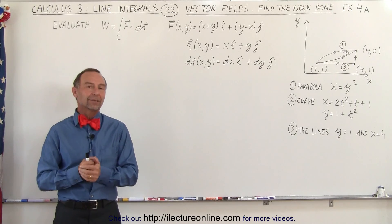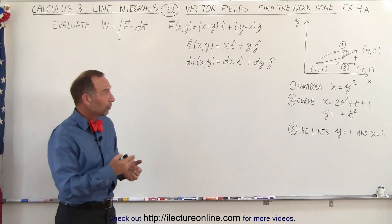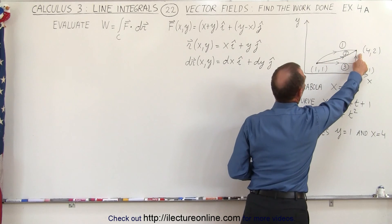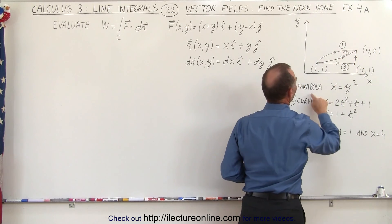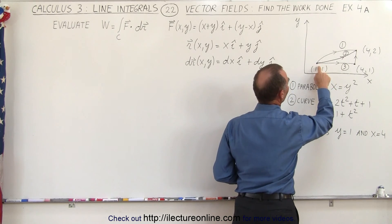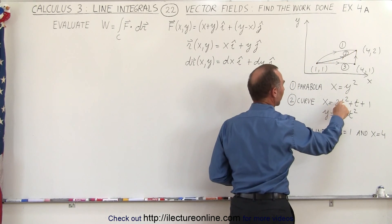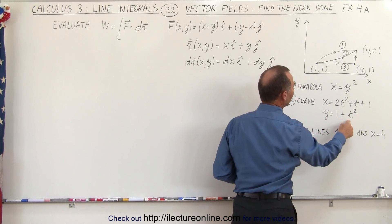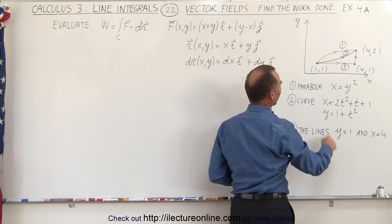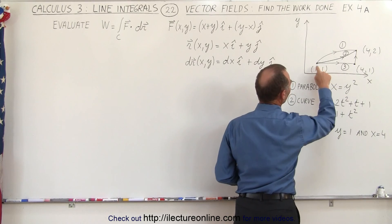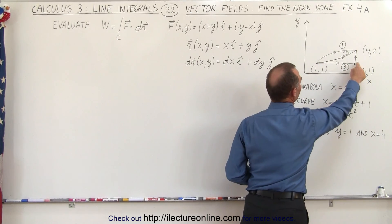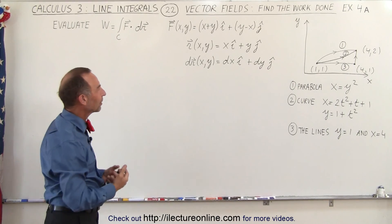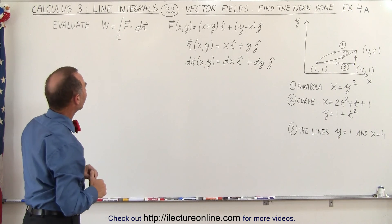Welcome to Y Lecture Online. The following problem will be done in three parts because we're going to take three paths. The curve will go from the point (1,1) to the point (4,2): first via a parabola defined by x equals y squared; second via a parametric curve where x equals 2t squared plus t plus 1 and y equals 1 plus t; and third along two straight lines where y equals 1 and x equals 4. This is a good way to get a feel for line integrals using vector fields.